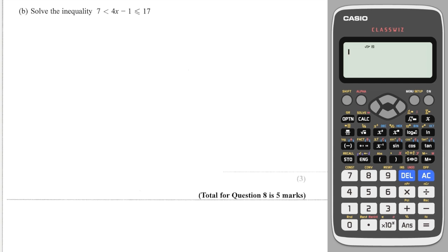Okay, final question is slightly trickier, I guess. In order to solve this, you need to add 1 to all 3 sides. This will give you 8 less than 4x less than or equal to 18, and then you need to divide all 3 sides by 4, which will give you 2 is less than x is less than 18 over 4 is the same as 9 over 2, which is 4.5.